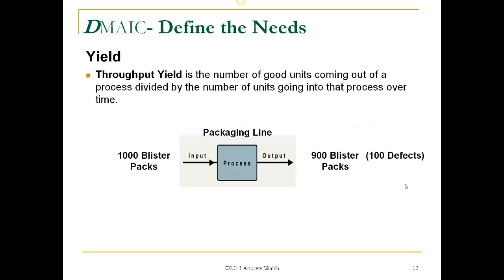Throughput yield is the number of good units coming out of a process divided by the number of units going into that process over time. For example, a packaging line with 1,000 blister packs going in and 900 blister packs coming out with 100 defects gives a throughput yield of 900 divided by 1,000, which equals 0.9.